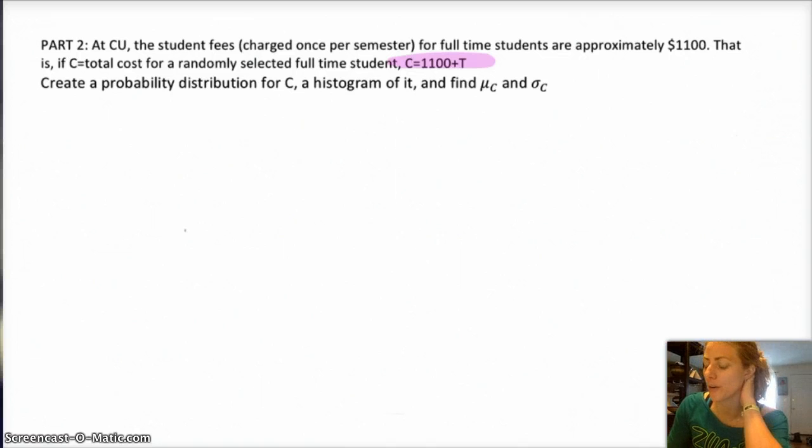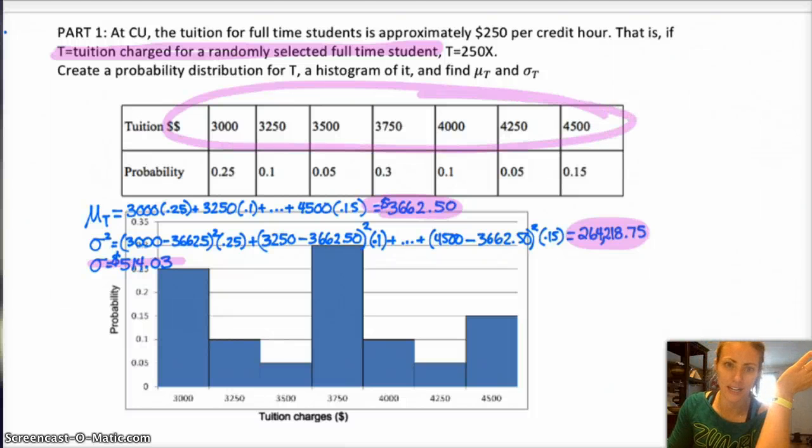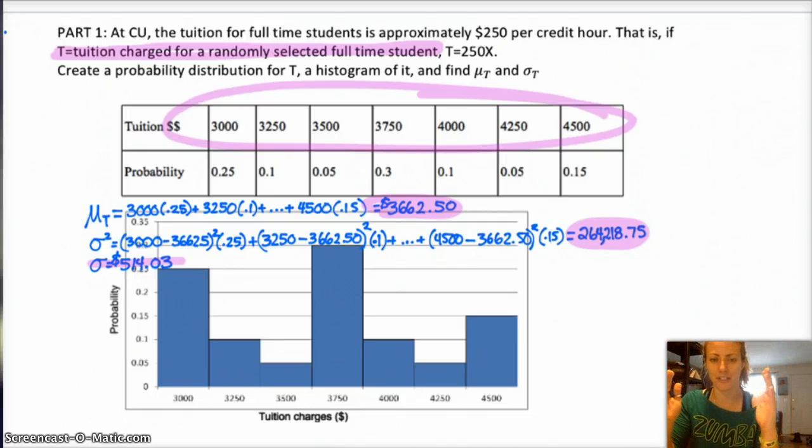And so, that's basically just, you know, we're going to be taking all of these tuition values and adding $1,100 to it. Finding the mean, standard deviation, and then making a histogram of that. And hopefully, you should be able to figure out pretty quickly. It just takes the graph, shifts it over. Standard deviation won't change. But your mean will increase by the $1,100. But we'll check it out anyways.